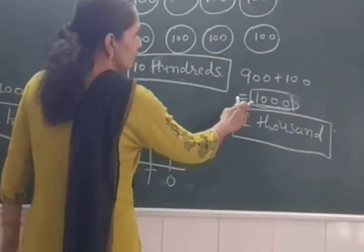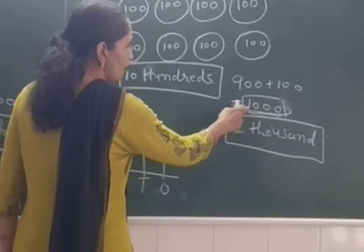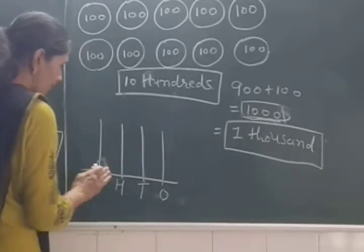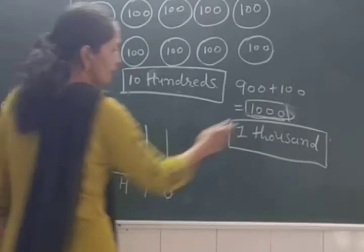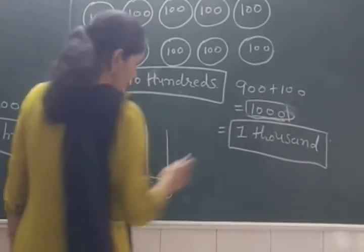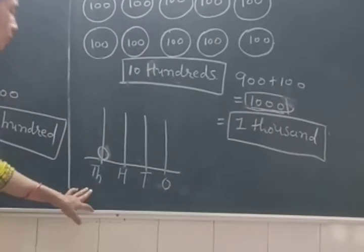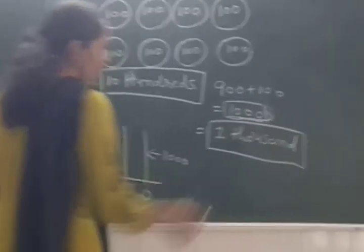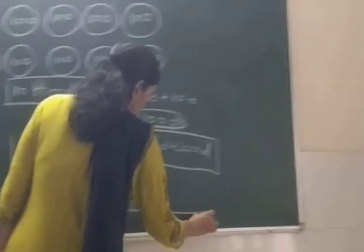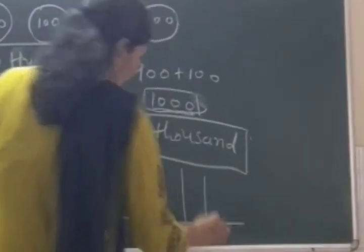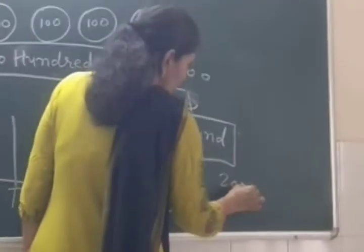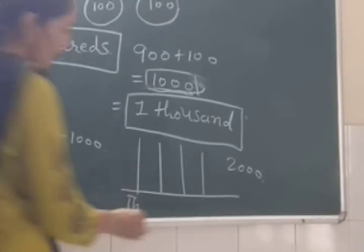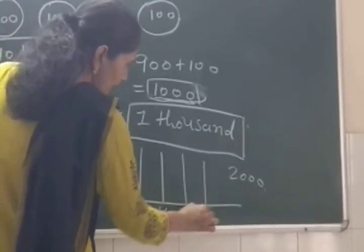Now in the thousands place, we have one. In the hundreds place, there is zero. In the tens place, there is zero, and in the ones place, there is also zero. So we have one thousand. The first place is thousands, hundreds, tens, and ones.